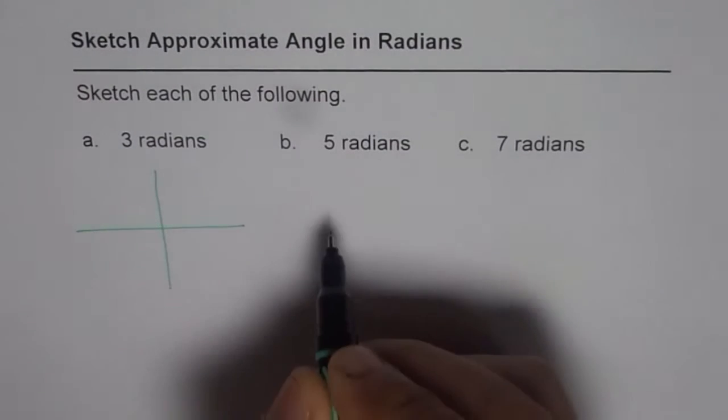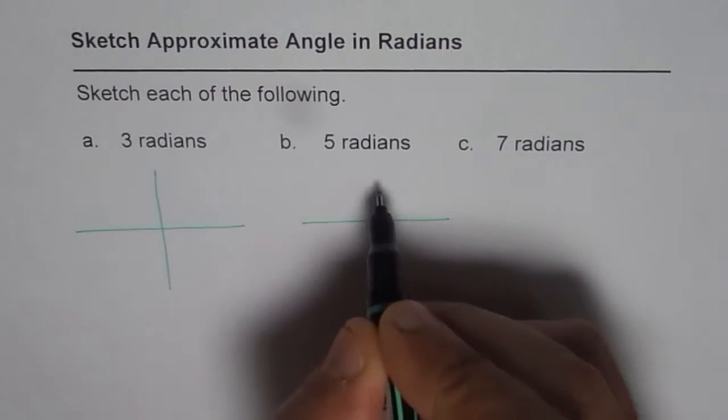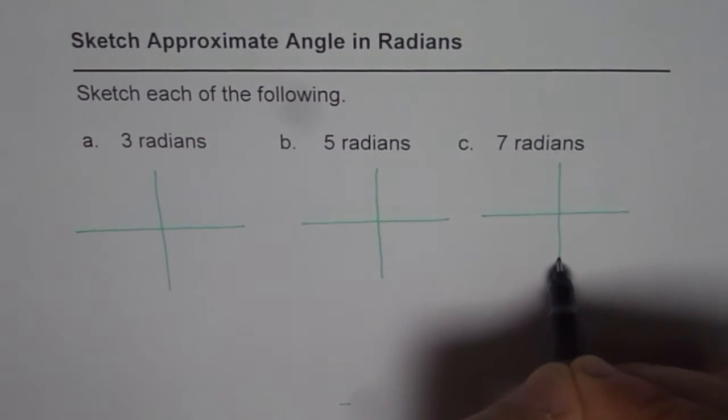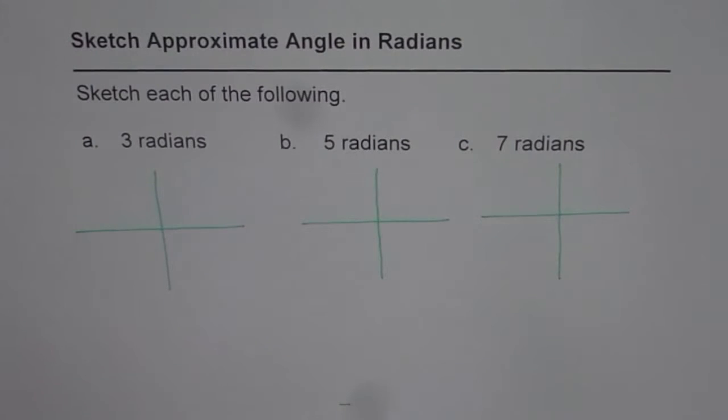So first let me draw the coordinate axis, x and y, straight line. Horizontal straight line will give us 180 degrees correct.